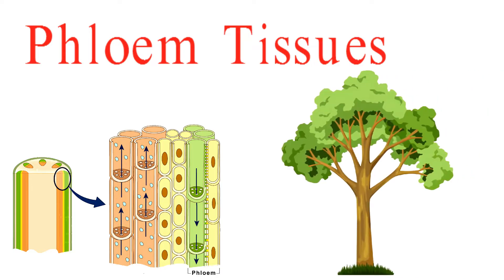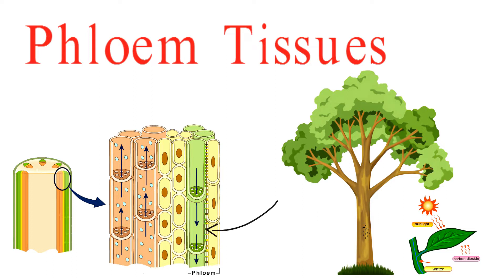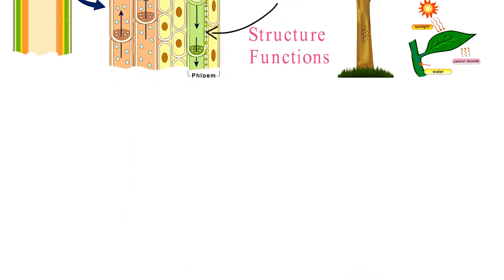Have you ever wondered how plants transport the essential nutrients they produce through photosynthesis to various parts of their bodies? Well, it's all thanks to the incredible phloem tissue. In this video, we'll explore its structure, function, and the remarkable way it sustains life in the plant world.